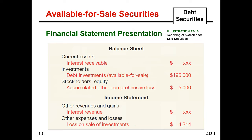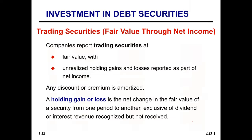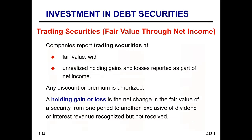This is how it looks on the financial statements: on the balance sheet, debt investments available for sale are reported at $195,000; in the stockholders' equity section, we have accumulated other comprehensive loss of $5,000. On the income statement, we see the loss on the sale of investments of $4,214 reported under the other expenses and losses section.